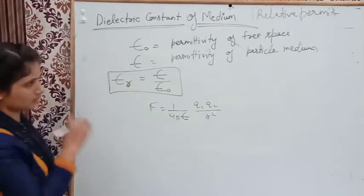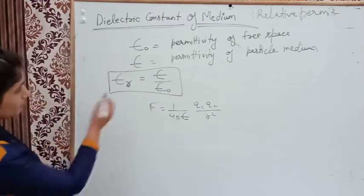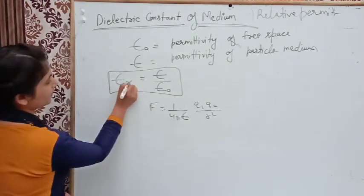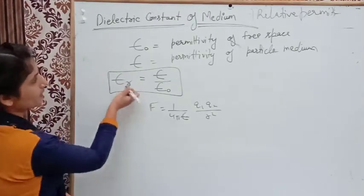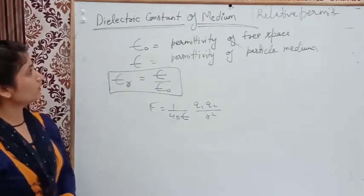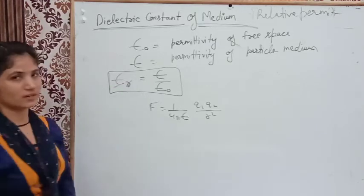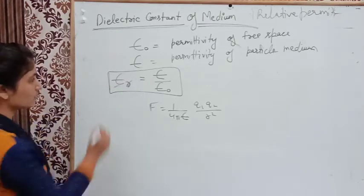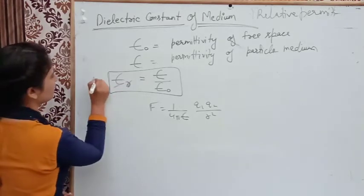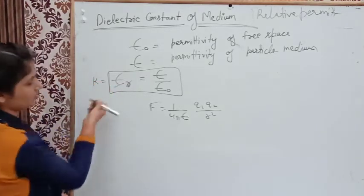Epsilon r represents the relative permittivity, and this is also our dielectric constant. Sometimes it is also denoted by K.